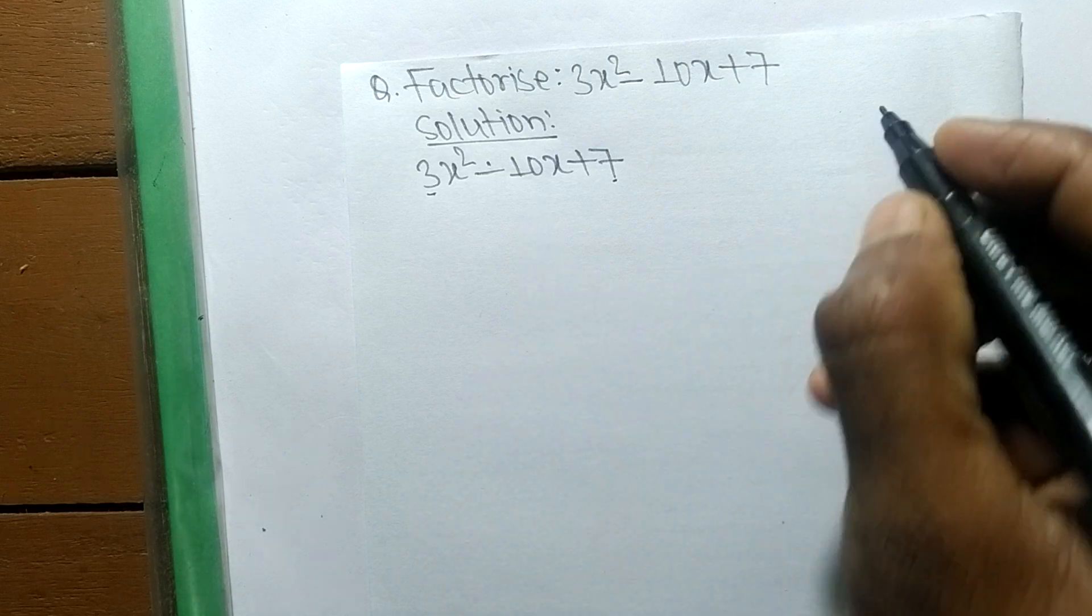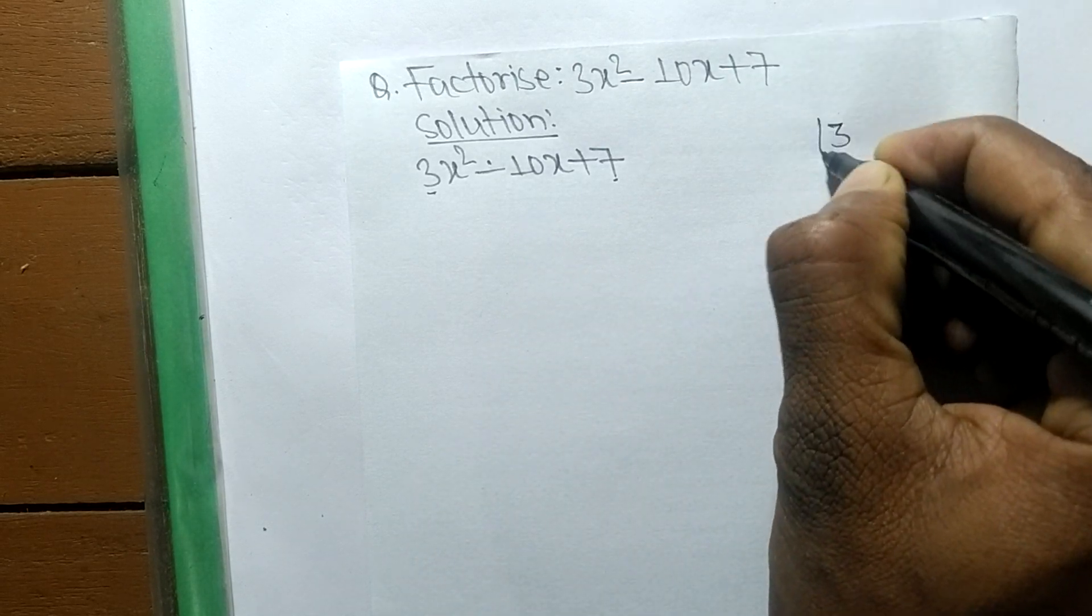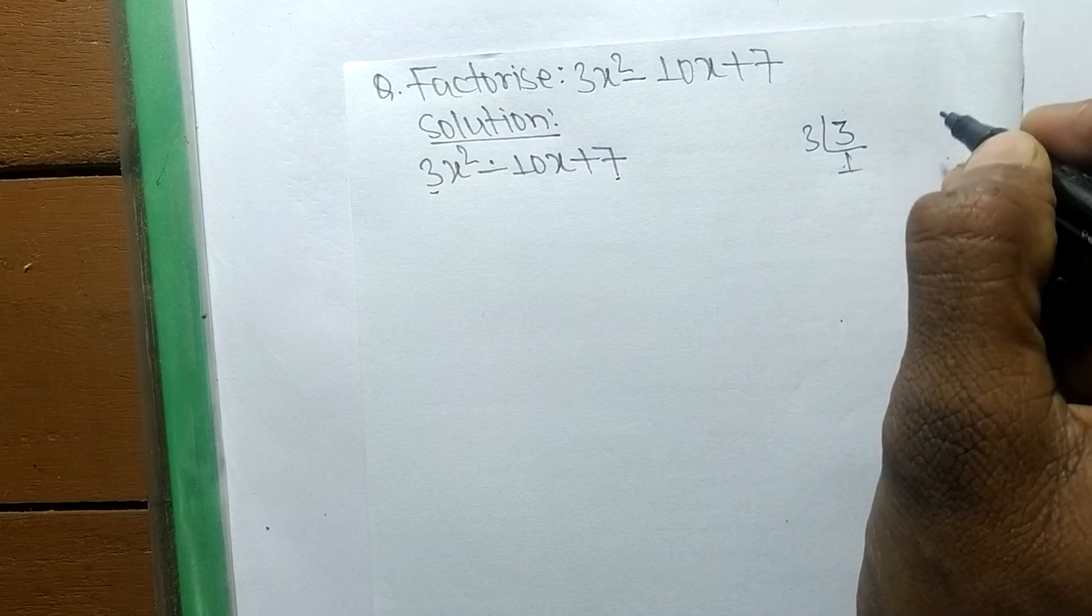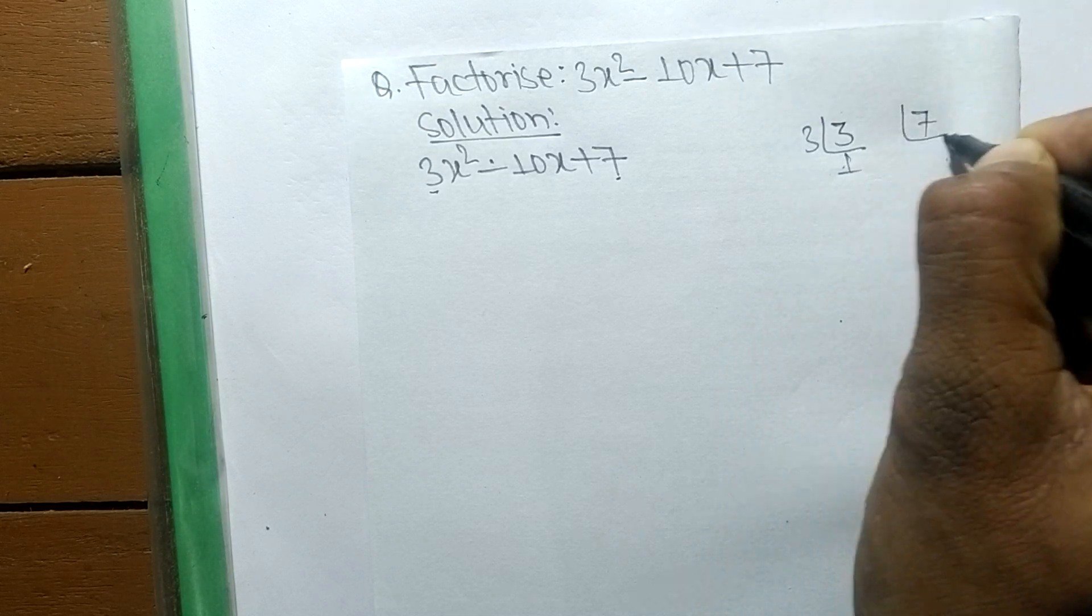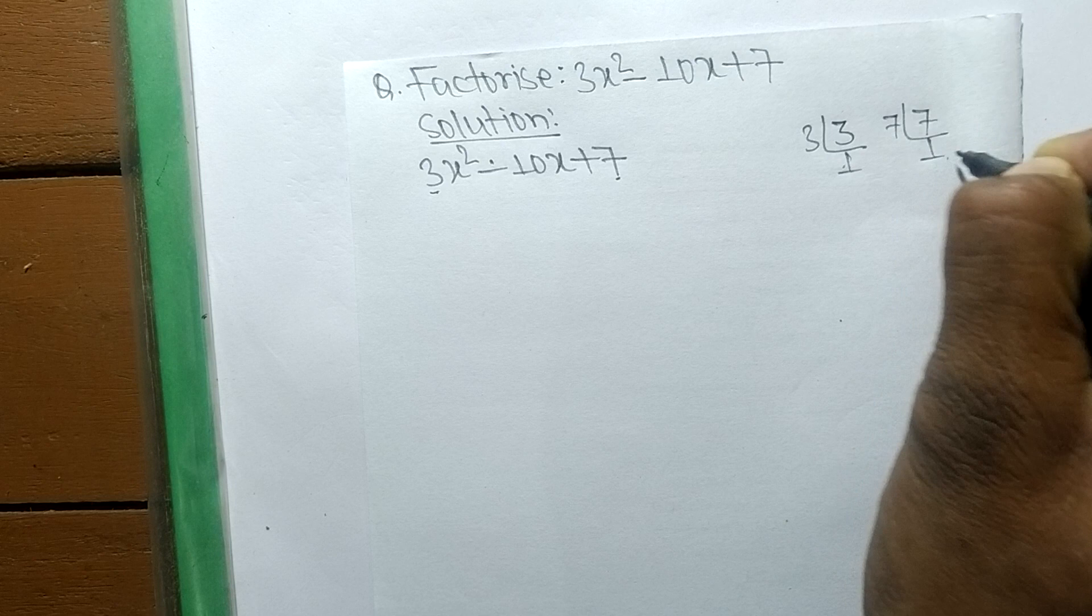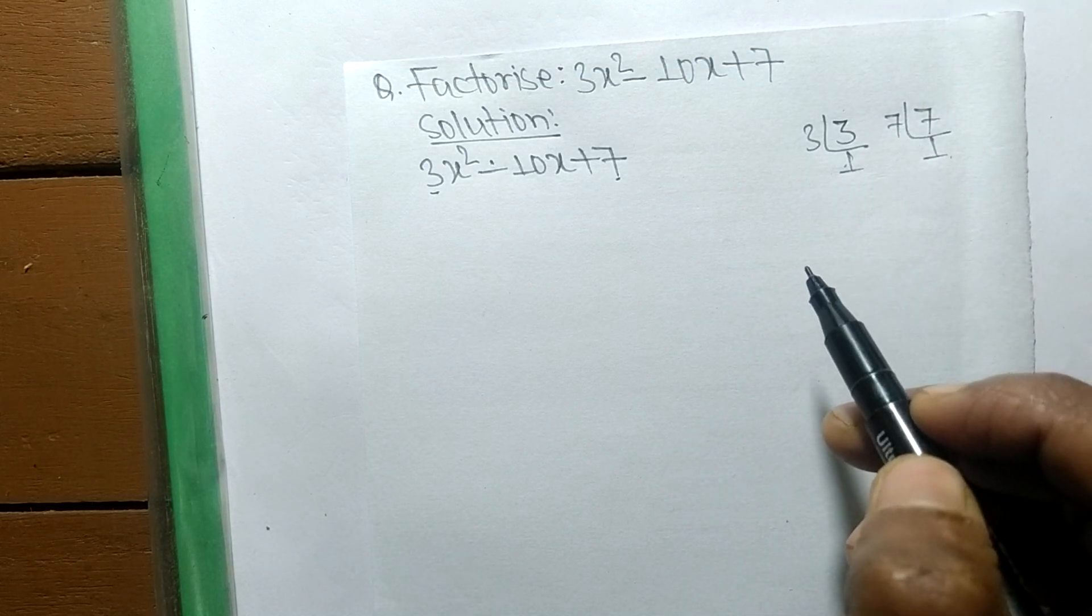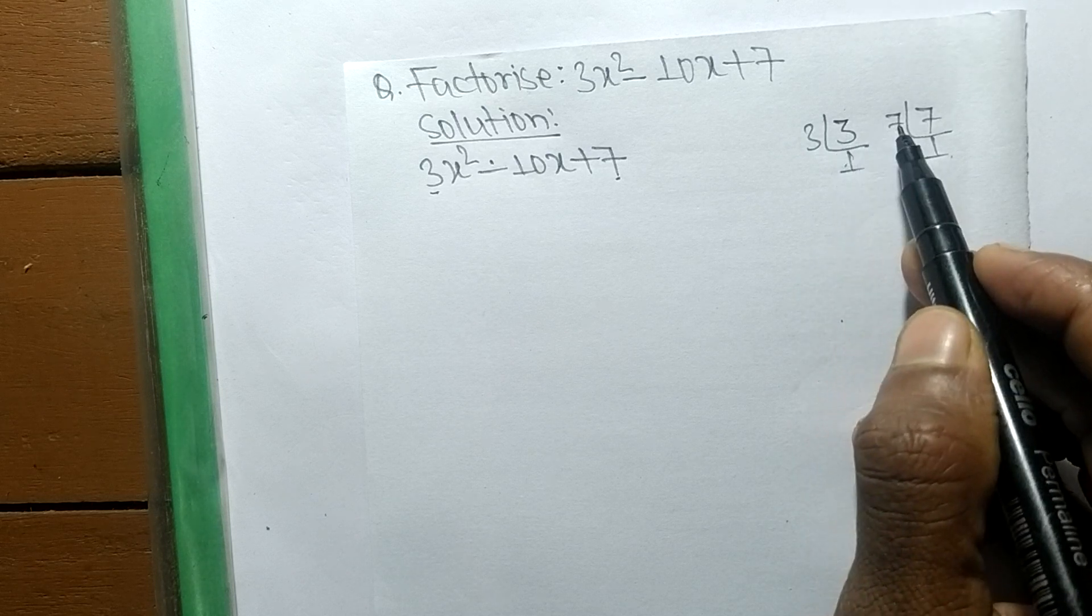The factors of 3 is 3 times 1, and the factors of 7 is 7 times 1. So we got the numbers 3, 1, and 7. By multiplying within these numbers,